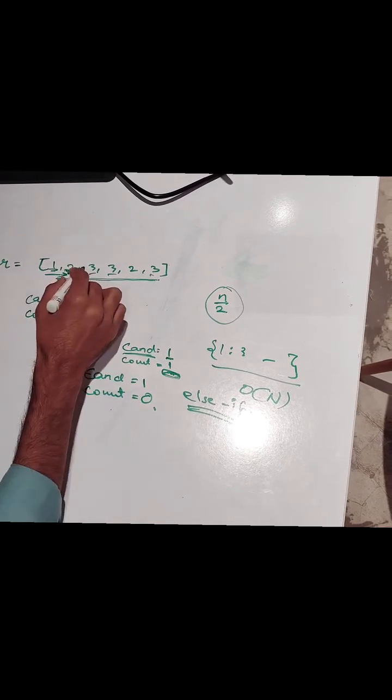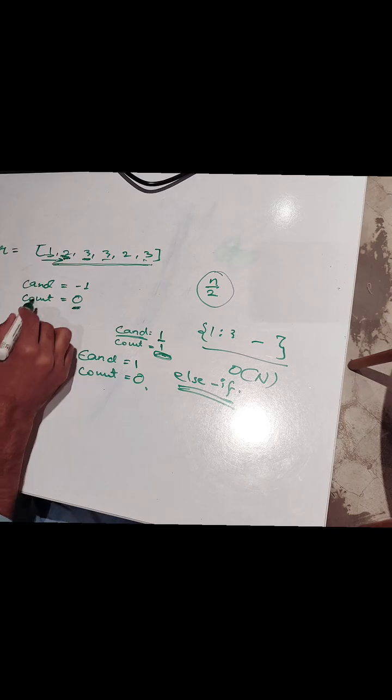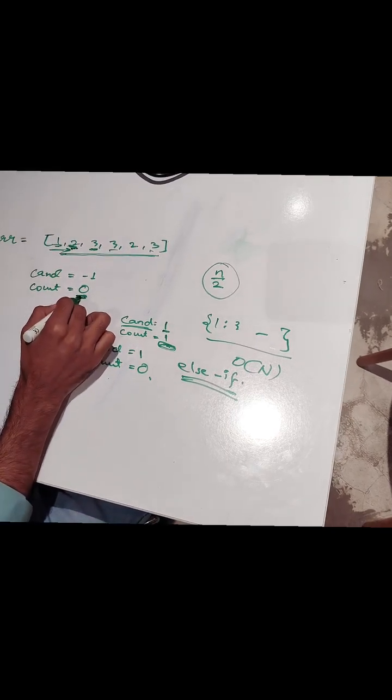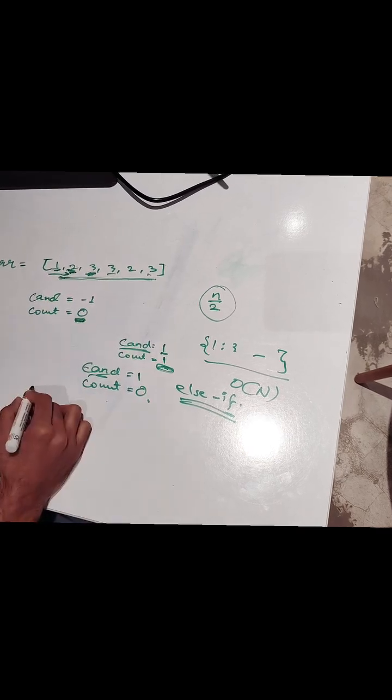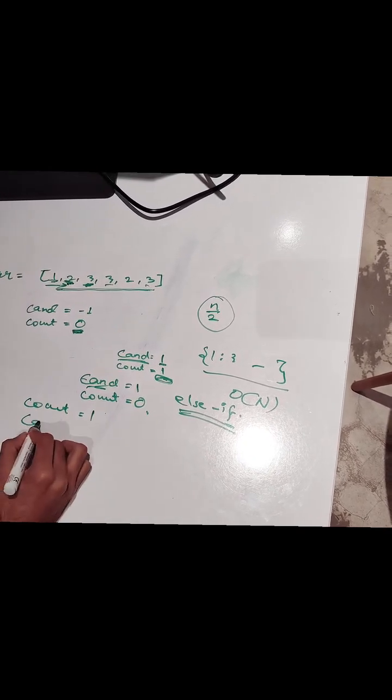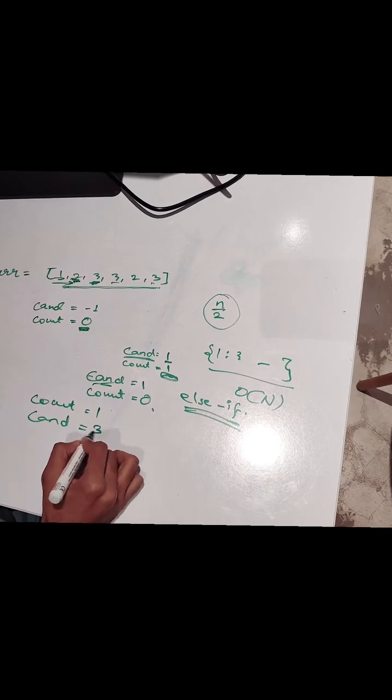So in next turn when we will come here, we will see first if count is 0. If count is 0, then we will make candidate as this element. So next turn count will become 1, but candidate will become 3.